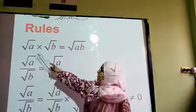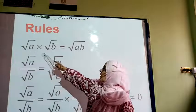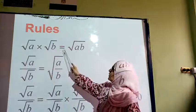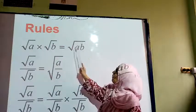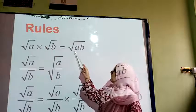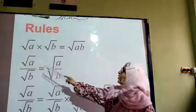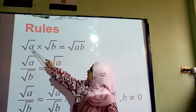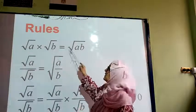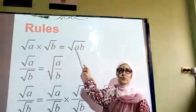If we have a root of a number multiplied by the root of another number, then we are going to have a root of the two numbers' multiplication. So if we have root 2 multiplying root 5, this answer is root(2×5), which is root 10.